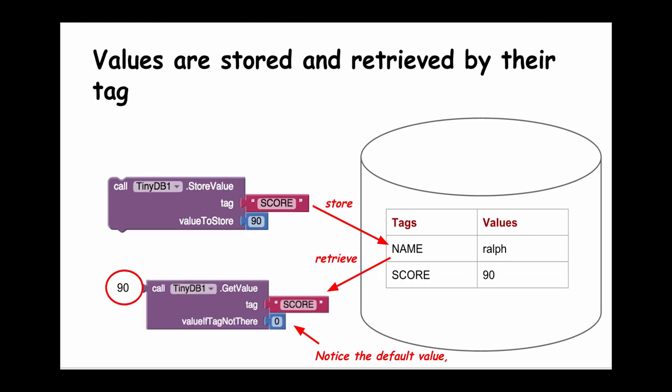Here's another example where we're going to store a number. In this case, I want to store somebody's score in a game. So my tag is going to be the word SCORE. The value I'm storing in this case is 90. Notice how a new row in the database is created with the tag SCORE and the value 90.